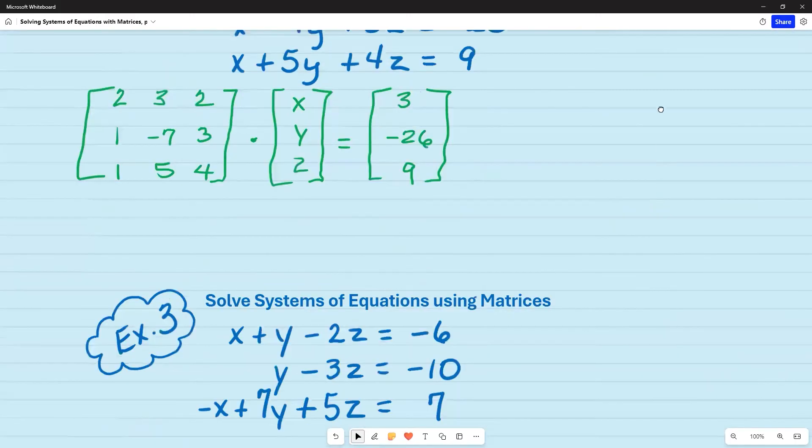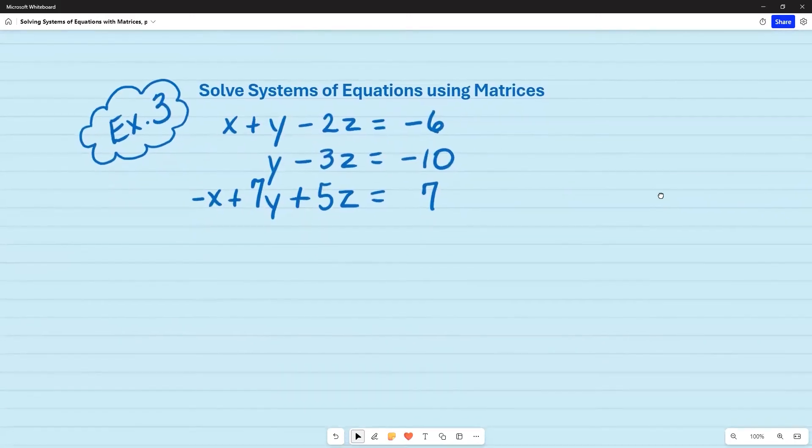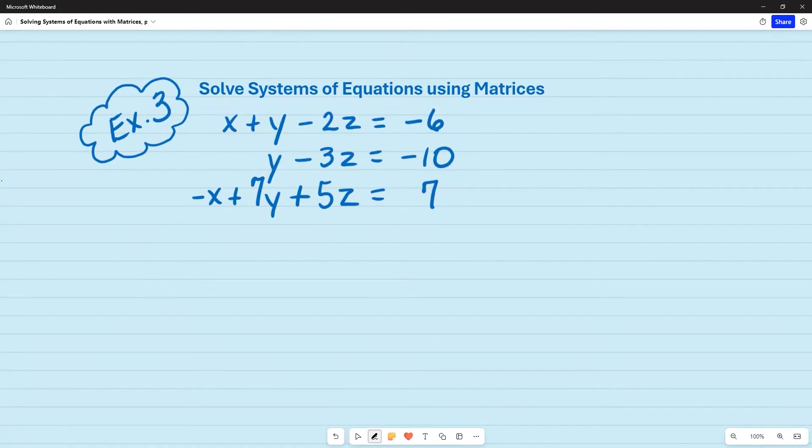When I go to example three, I'm asked to solve systems of equations using matrices. What I need to do is set up my coefficient matrix, which is going to be 1, 1, negative 2. And what I notice is I'm missing an x. So I'm going to put a zero placeholder there. And then I have a 1, y, negative 3, negative 1, 7, and 5. So it's very important that you align all of the coefficients with the correct variable. If it's missing something, you would just go ahead and put that zero placeholder.